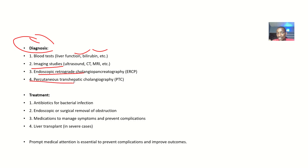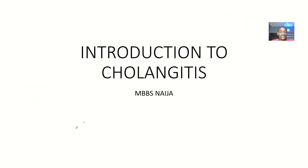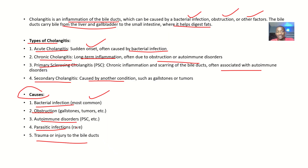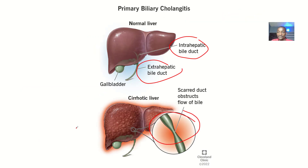For treatment: if it is bacterial infections, you want to use antibiotics. They could do endoscopic or surgical removal of the obstruction. There could be medications to manage symptoms and prevent possible complications from the disease. In severe cases, there could be a liver transplant. That's it about the introduction and understanding of cholangitis — from the definition to the types, causes, symptoms, complications, diagnosis, and treatment.